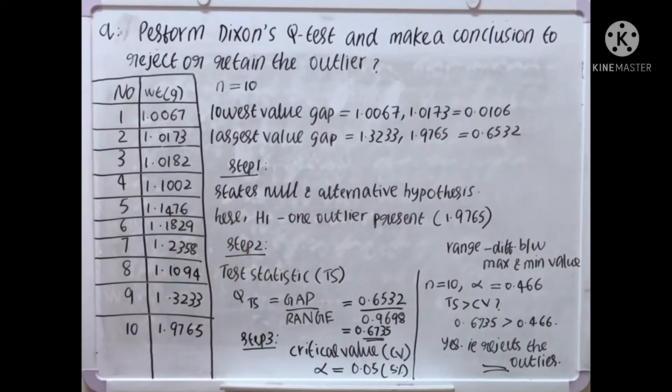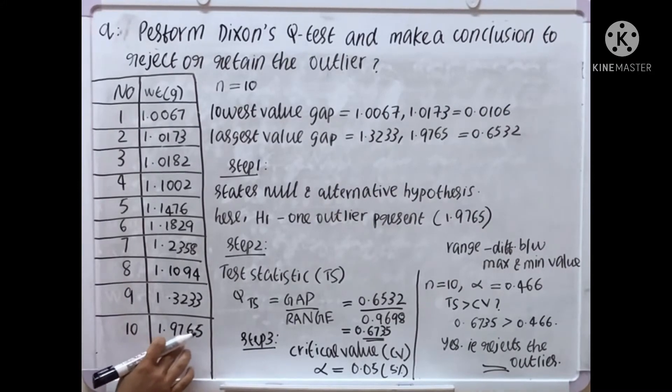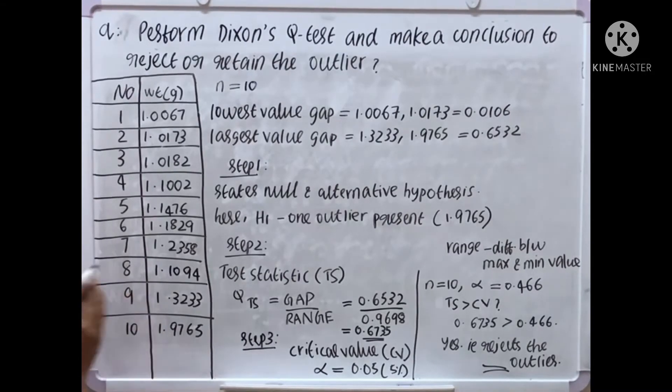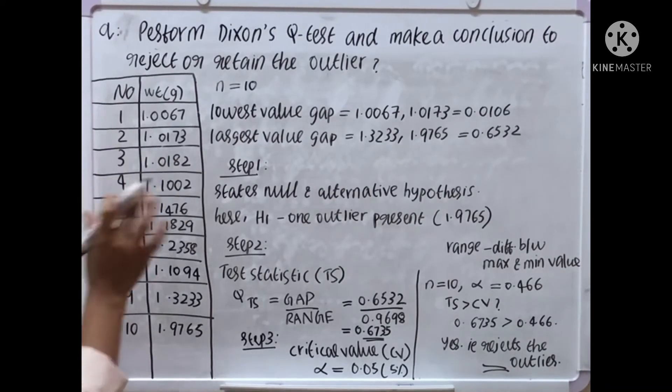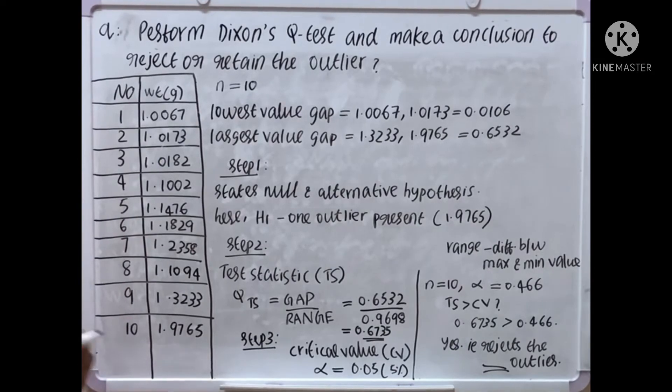Largest value to the before largest value. 1.9765 is the largest value, which minus 1.3233, which is equal to 0.6532. Two gaps we get. But the lowest value gap is very small, 0.0106.